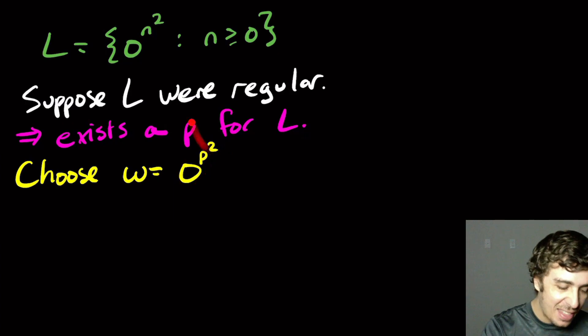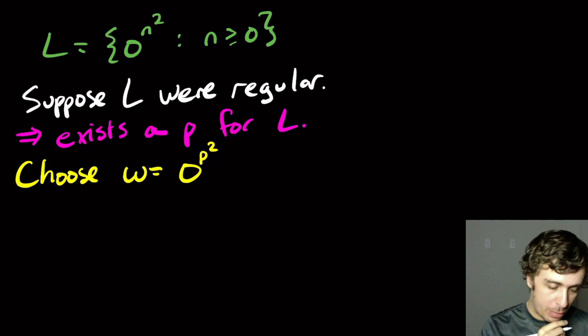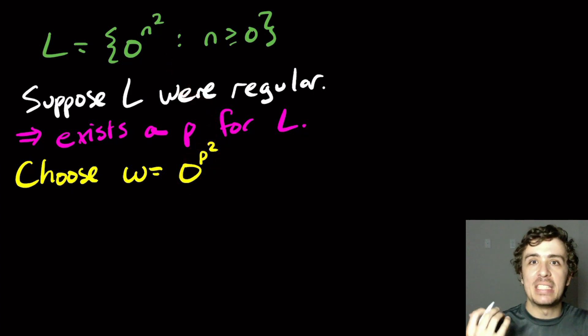Well, that's clearly in the language because I just substituted the number in. And p squared is always at least p when p is an integer. And so that's all that we actually need. It turns out that this string does work.